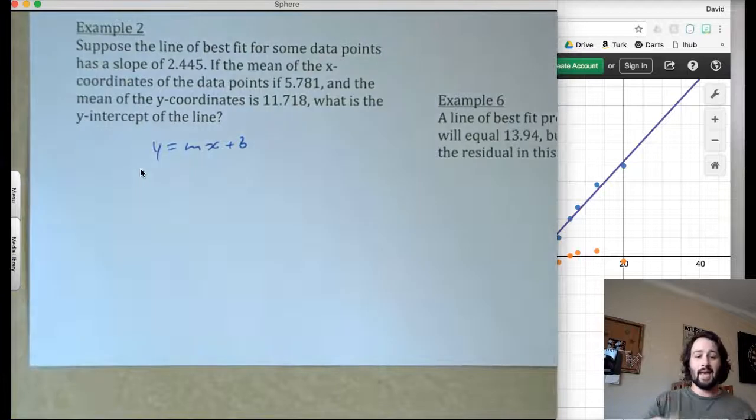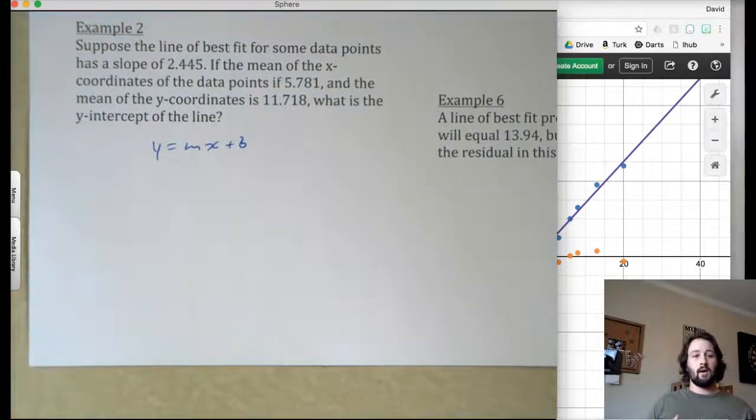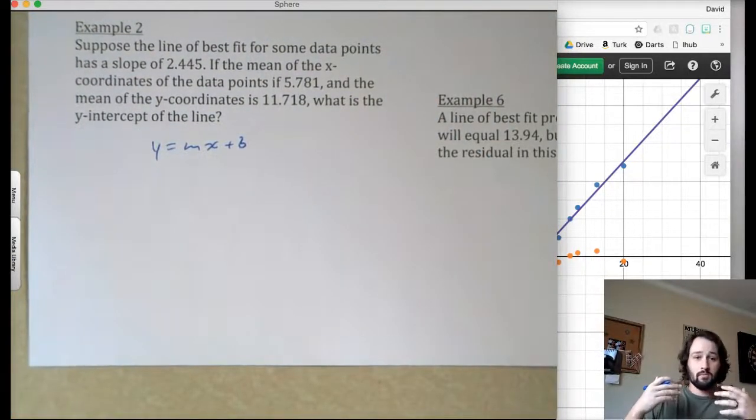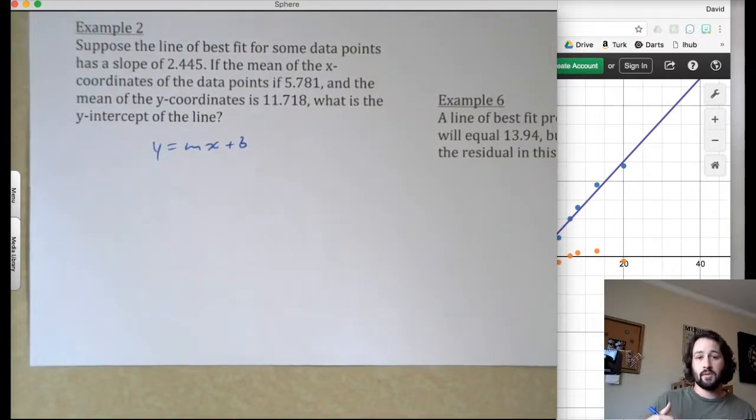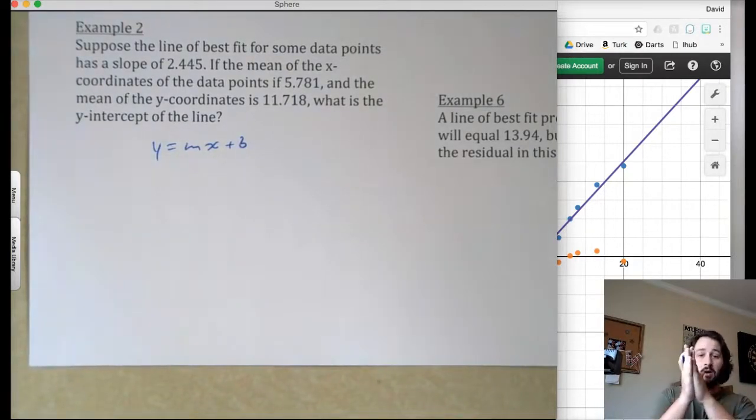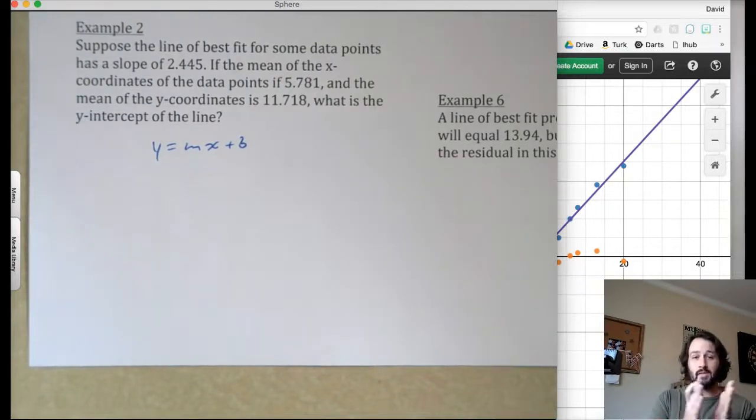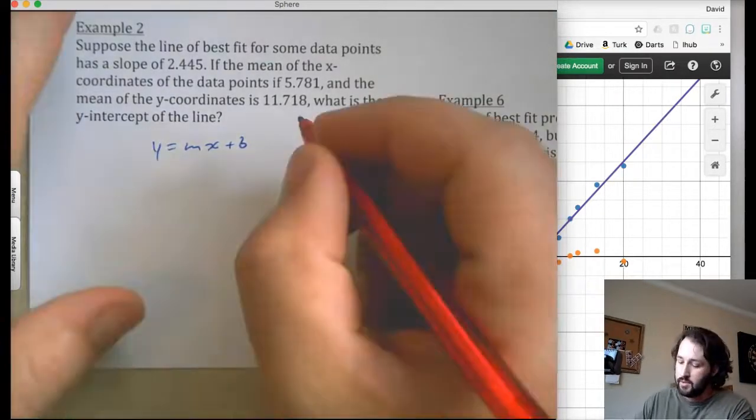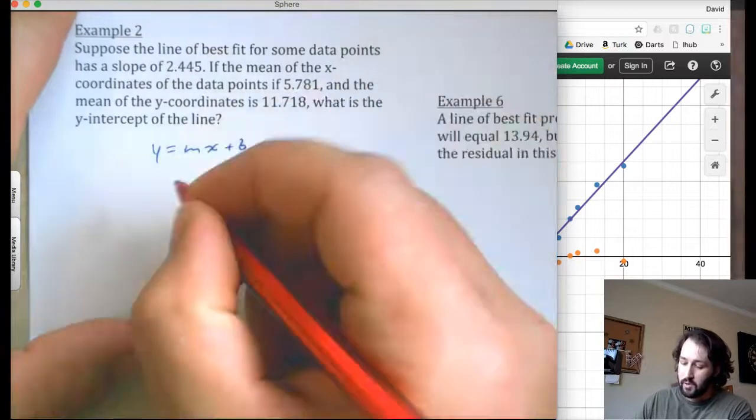So this is saying, on average, the x-coordinates are 5.781. On average, the y-coordinates are 11.78. So that's exactly on our line. On average, the x-coordinates are 5.781. On average, the y-coordinates are 11.78. So that's exactly on our line. The average is on the line. The mean of the coordinates is on the line of best fit. So if I know that's on the line, then I can use those as my x and y-coordinates.